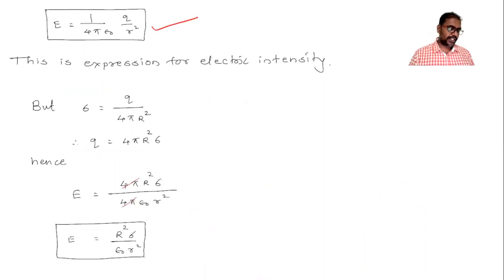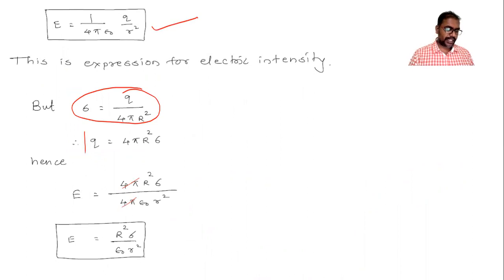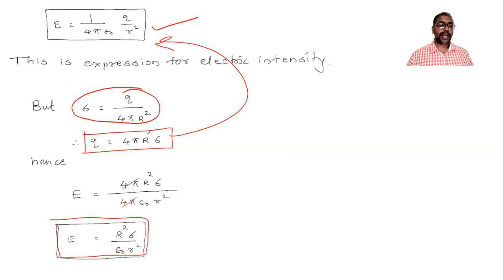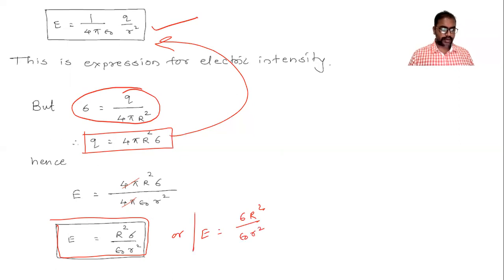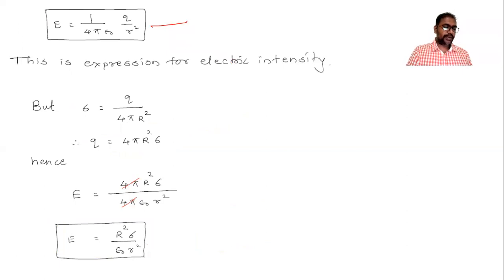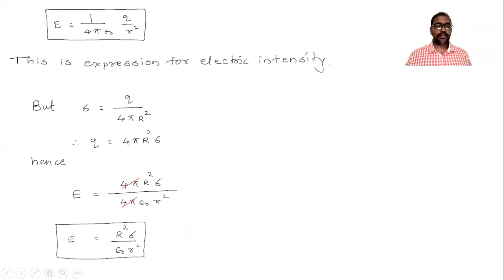We also know that surface charge density sigma equals charge divided by area, where area is 4πR². Substituting this value of charge into the above equation and canceling the common factor 4π from numerator and denominator, we get the final formula for electric intensity in terms of capital R and small r: E = σR² / (ε₀r²). So we have two formulas for electric intensity — one in terms of Q, and one in terms of surface charge density sigma. I hope you understood this derivation.